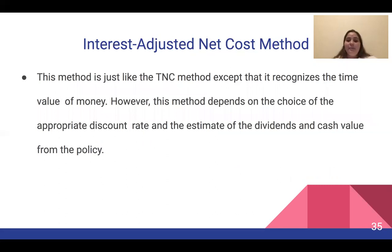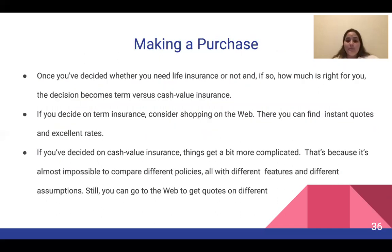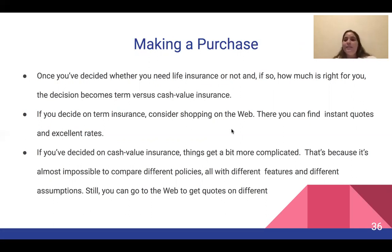The IANC is basically TNC but it does recognize the time value of money. However, this method depends on the choice of the appropriate discount rate and the estimate of dividends and cash value from the policy. When deciding on life insurance, determine how much you need. For term insurance, consider shopping online where you can find instant quotes and excellent rates. If you decide on cash value insurance, it gets more complicated since it's almost impossible to compare different policies with different features and assumptions, but you can still go online and get quotes on the different kinds.